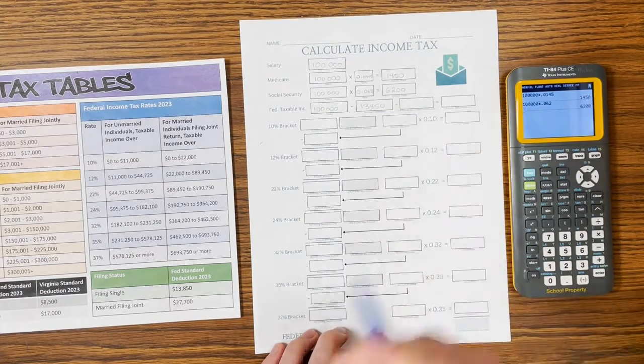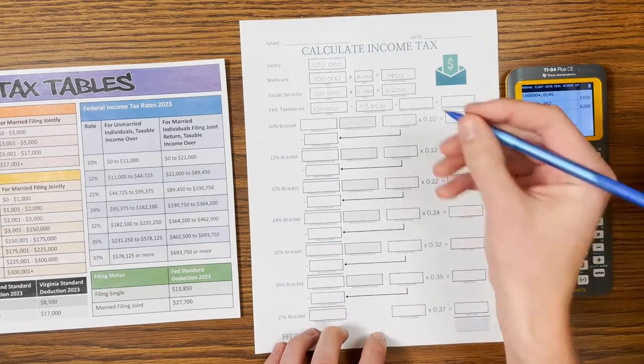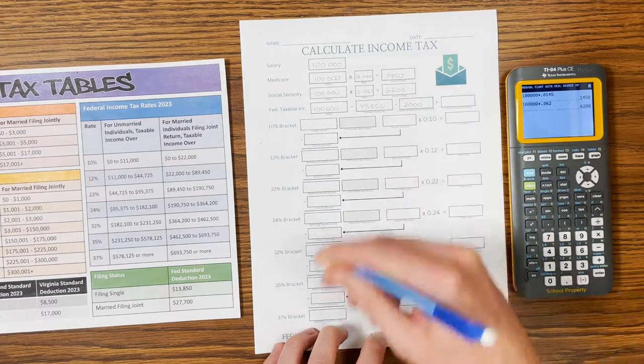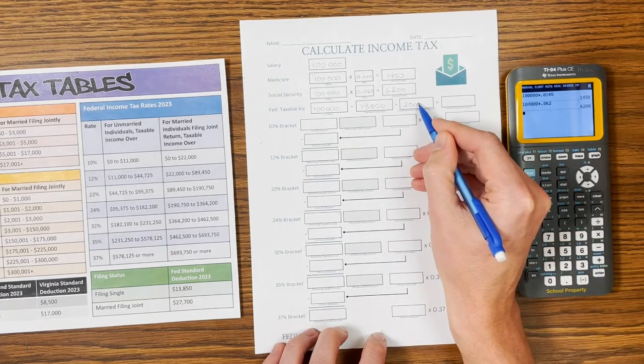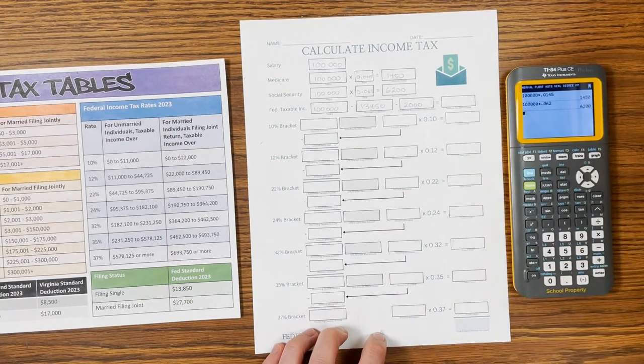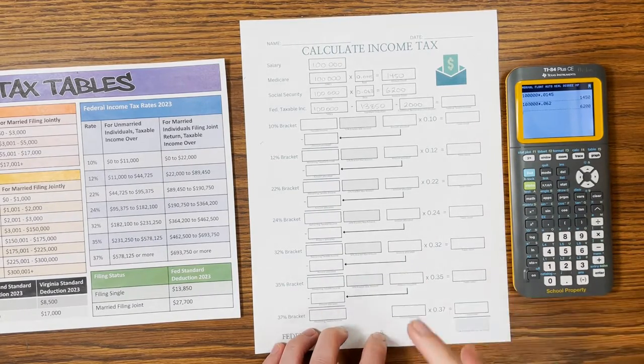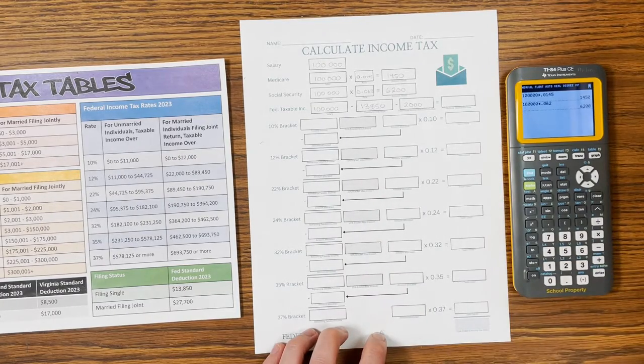And then if you have a traditional retirement contribution, which I will do for this example, let's pretend we're putting $2,000 into a traditional 401k, 403b, 457, or IRA. This does affect how much taxable income you have. So the federal government will reduce the amount of income they tax if you make a pre-tax contribution to a retirement account.